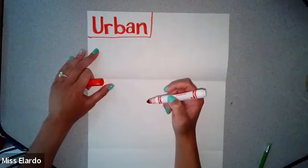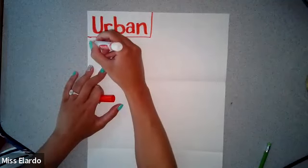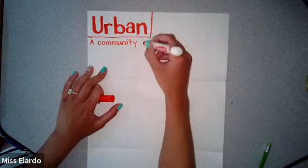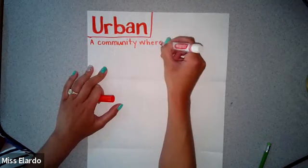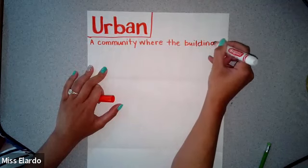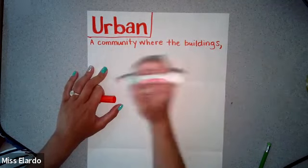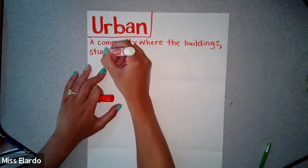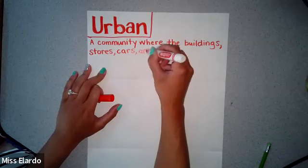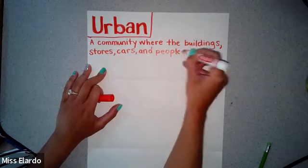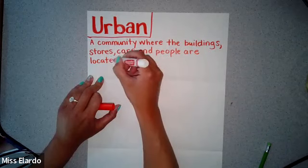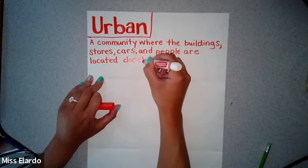It is off center but I did that on purpose. An urban community is a community where the buildings — this is a list, so comma — buildings, stores, cars, and people are located closely together.